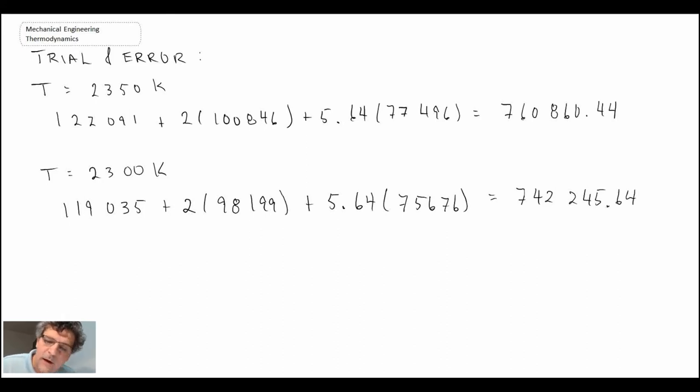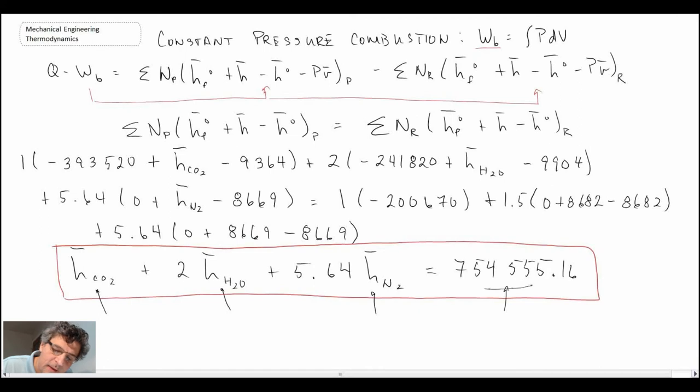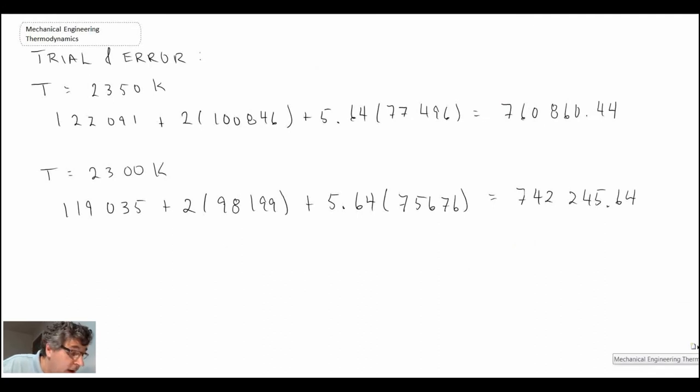So that's what we get for the first law, with the temperature either being 2350 or 2300. And if we look back at our previous equation, this is what we're trying to match on the right-hand side. So let me put that in the middle. The value there was 754555.16. So look at that. I really picked those values well, didn't I? Because we can see this is right in the middle of those two numbers. So we know that the final temperature we have is somewhere between 2350 and 2300. The way that we will determine that is we will perform an interpolation.